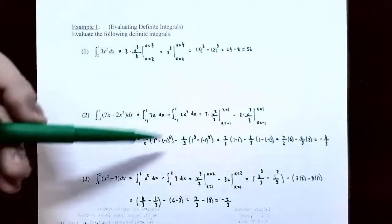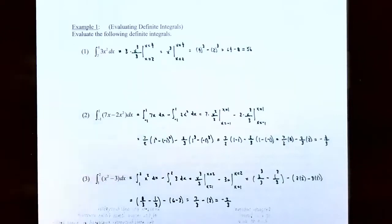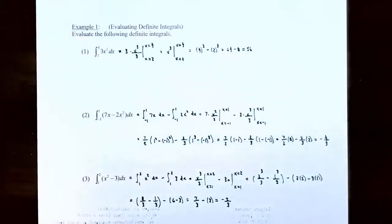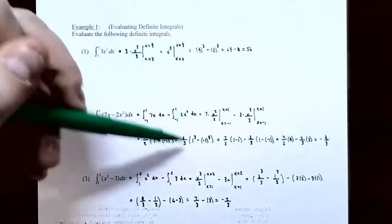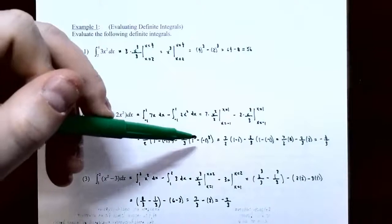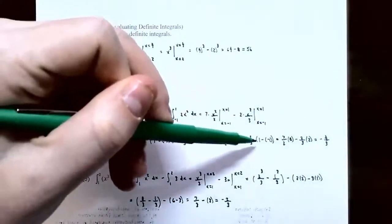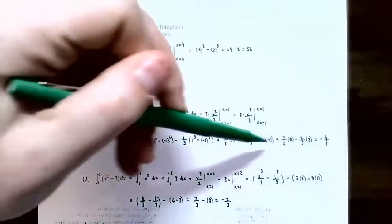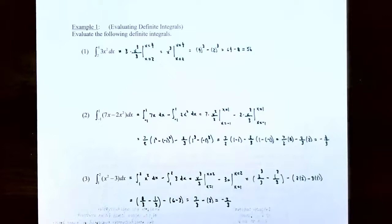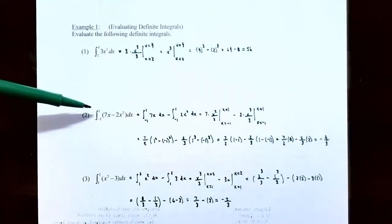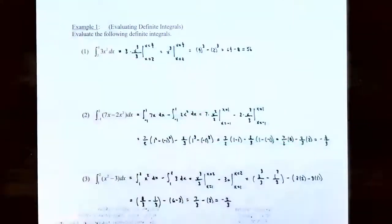Simplifying: one squared is one and negative one squared is one, so the first parentheses is seven halves times zero. For the second: one cubed is one and negative one cubed is negative one, giving two thirds times two, which is negative four thirds. So seven halves times zero minus negative four thirds gives negative four thirds. The area under the curve y equals 7x minus 2x squared from x equals negative one to x equals one is negative four thirds — meaning there is more area below the x-axis than above.